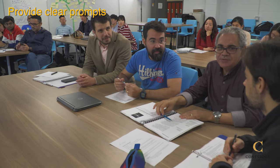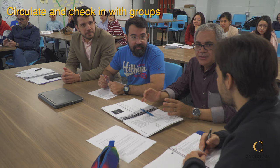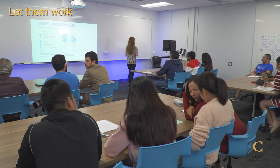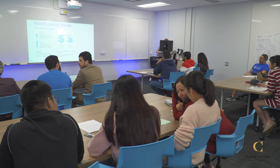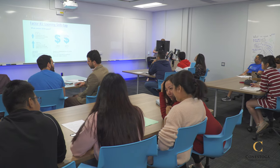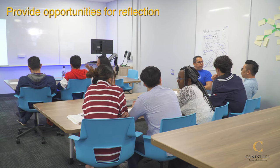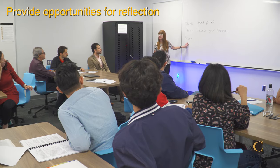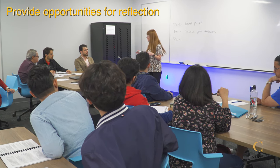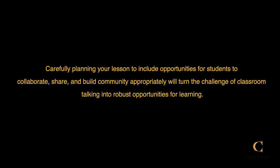Make sure that the task or prompt is clear. For a timid group, circulate and ensure the instructions are clear. Leave time and space to work out the process, but don't wait too long before checking back in. In some cases, you may need to do step one of a task with a group to get them started. It's okay for students to be quiet and do silent seat work. Consider a think-pair-share to give students a chance to reflect before engaging in group activities. Carefully planning your lesson to include opportunities for students to collaborate, share, and build community will turn the challenge of classroom talking into robust opportunities for learning.